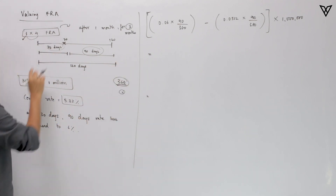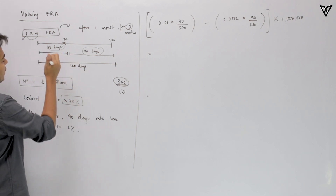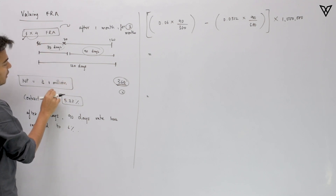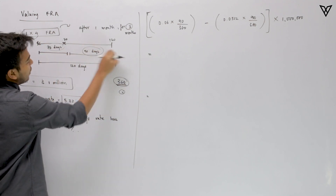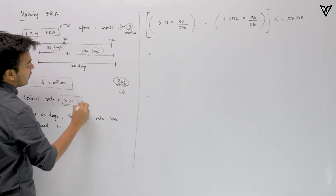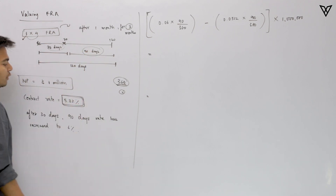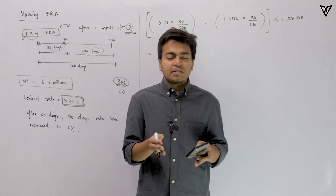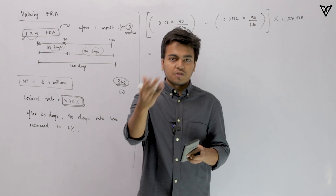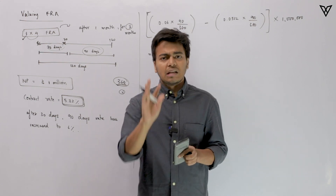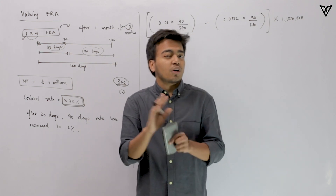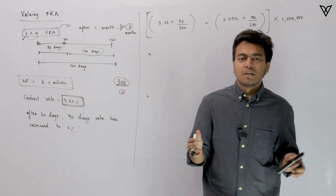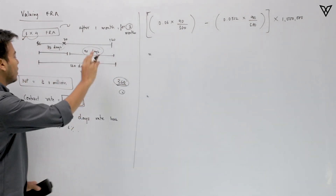We have a 360-day convention for our FRA contract and we use simple interest rather than compounding. The long party has agreed to borrow 1 million dollars after 30 days for a period of 90 days at an annualized rate of 5.32%. This is something already established about the contract.